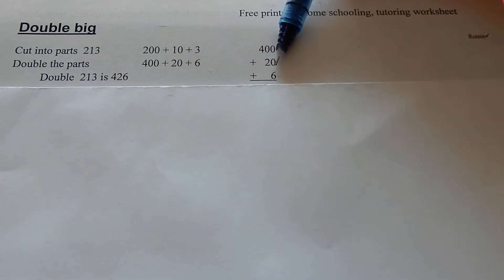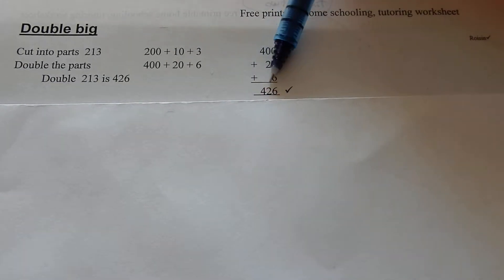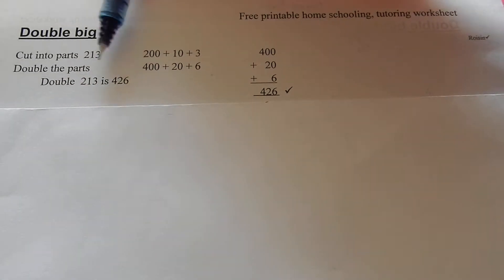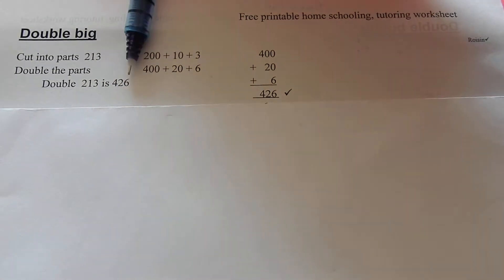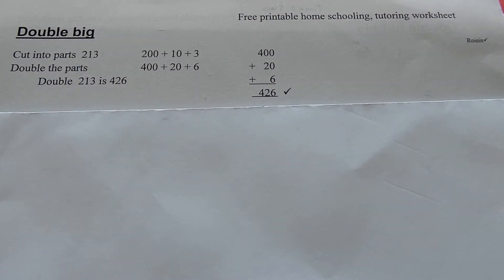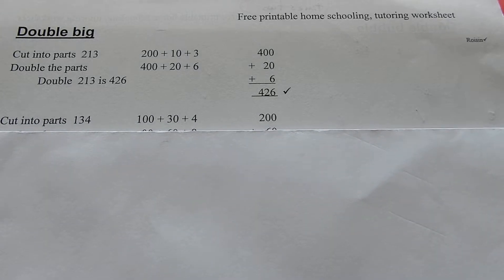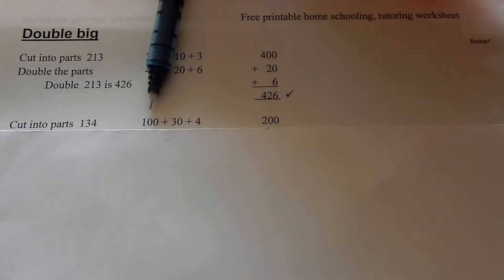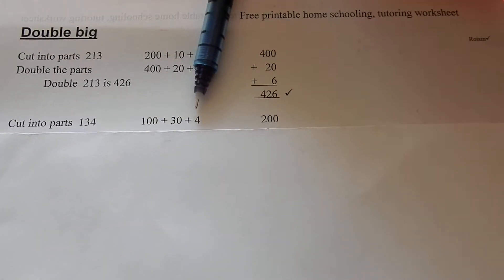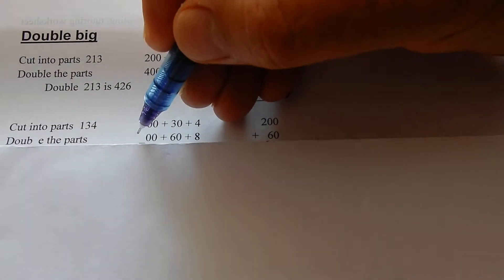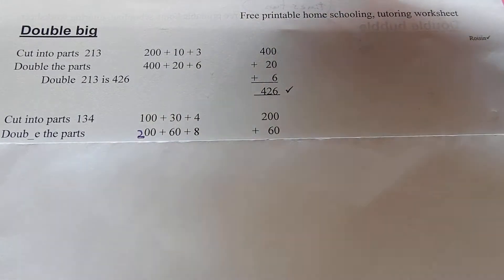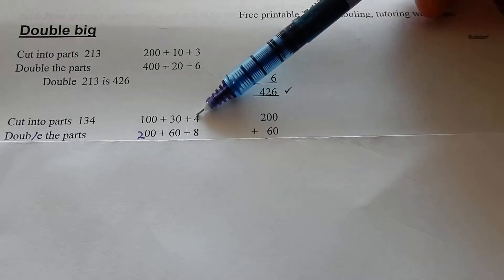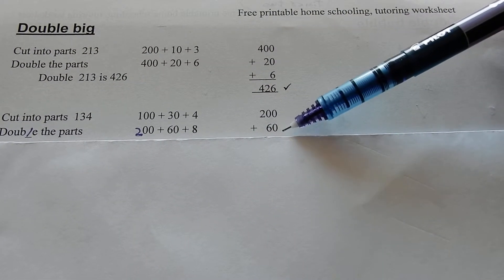426 is double 213. Double the 2 becomes 4, double the 1 becomes 2, double the 3 becomes 6. 426. Now we're gonna double 134. Cut it into parts: 100 plus 30 plus 4.